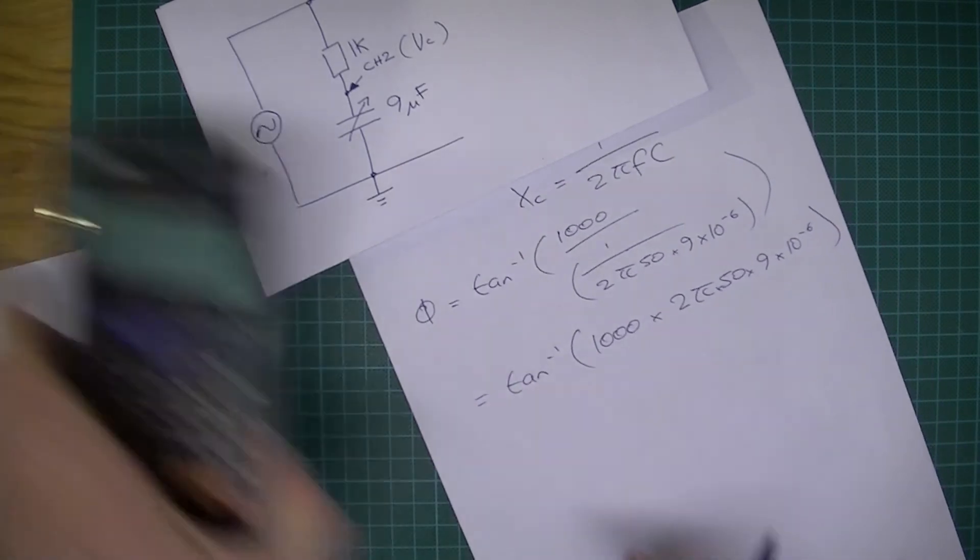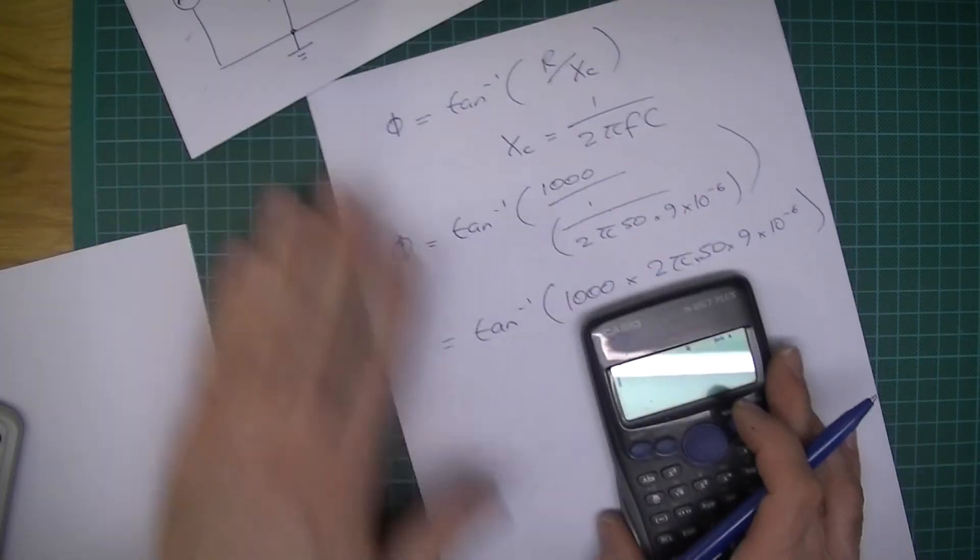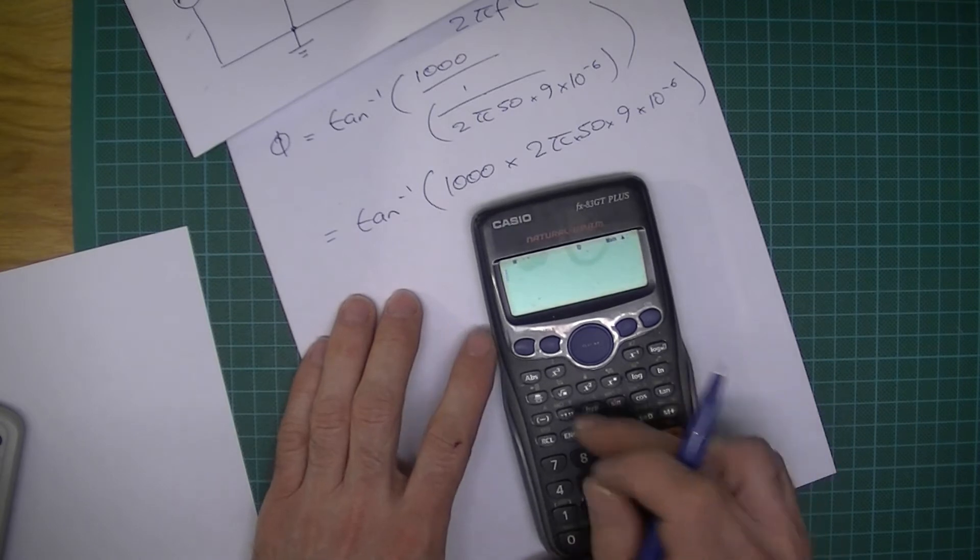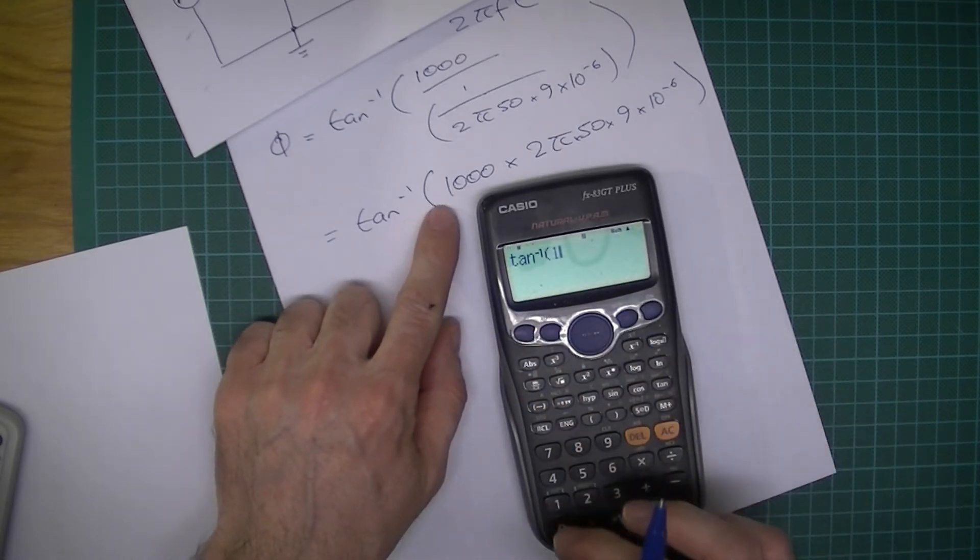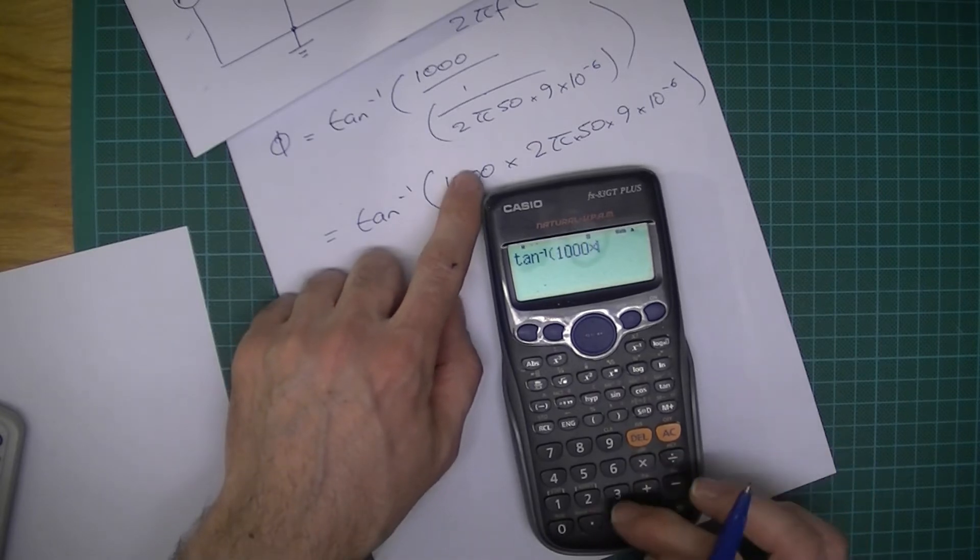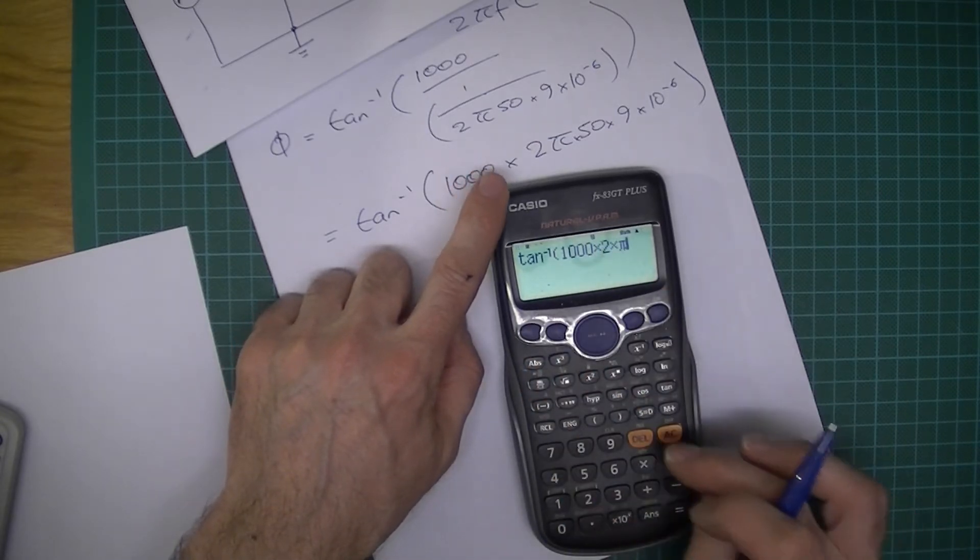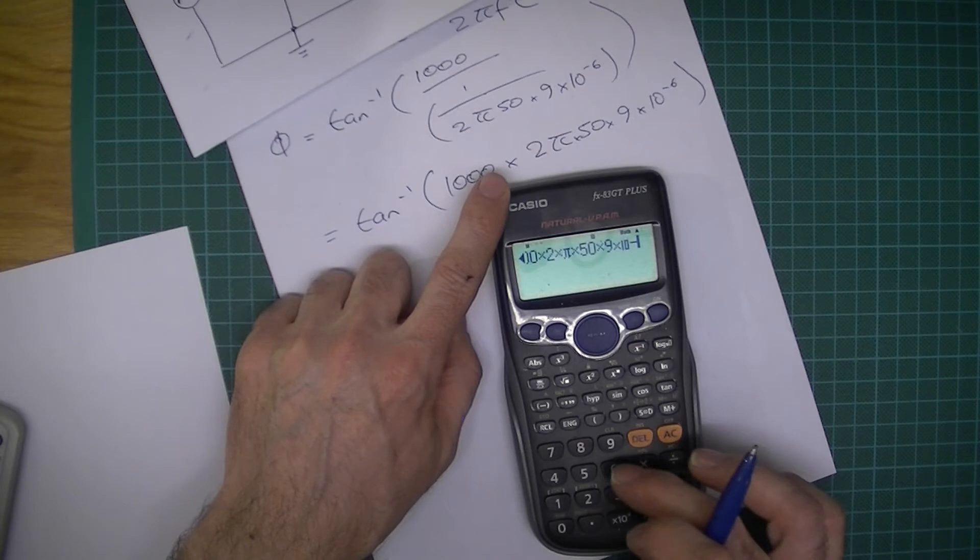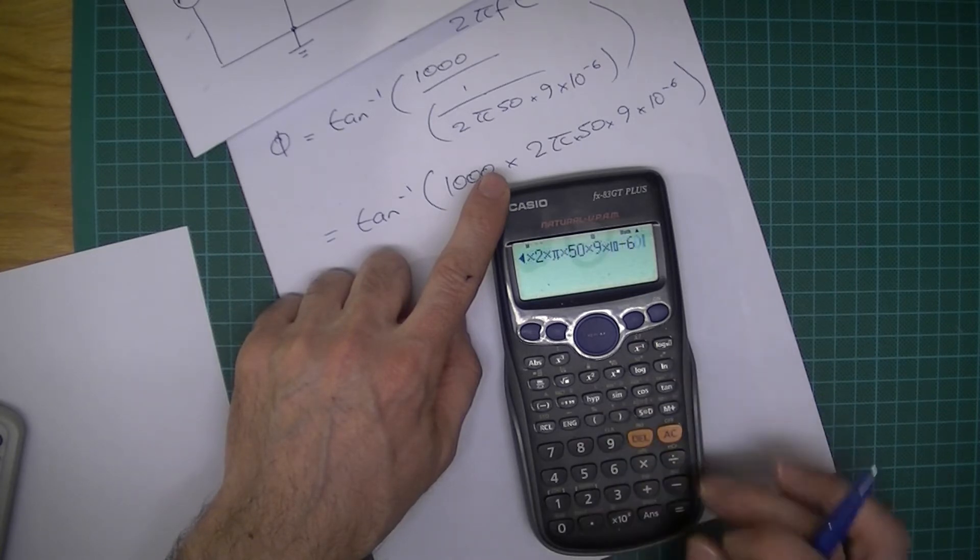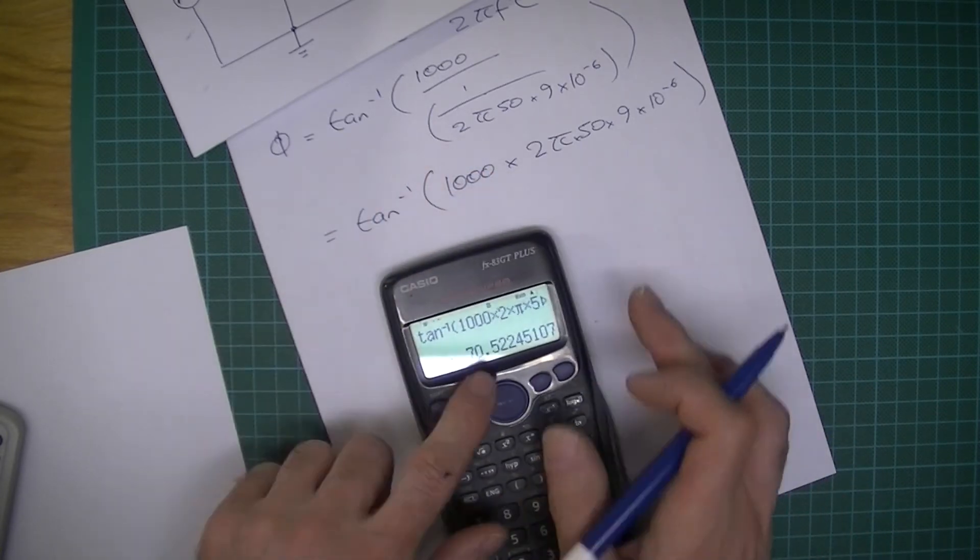OK. Quick calculation. So 10,000 times 2 times pi times 10 to the minus 6. OK. 10 times 50 times 9 times 10 to the minus 6 equals 70.